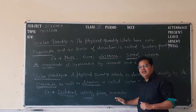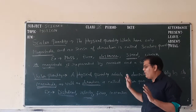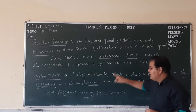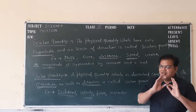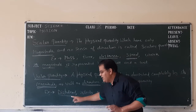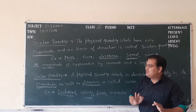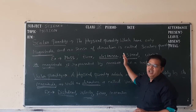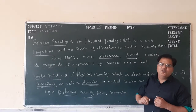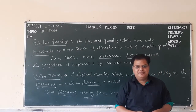Both force and momentum we are learning in another chapter. One more important thing: speed and velocity have the same unit, and distance and displacement have the same unit. But what is the difference? The difference is that speed gives you only magnitude, while velocity gives you magnitude as well as direction. Thank you, students.